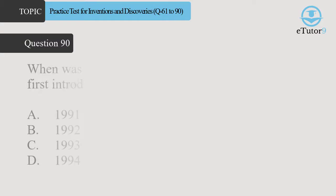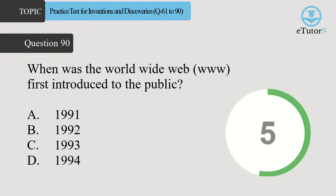Question 90. When was the World Wide Web, WWW, first introduced to the public? Answer is C. 1993.